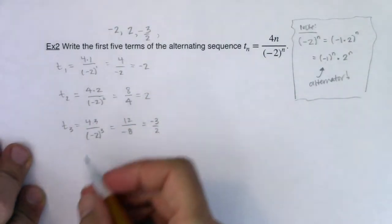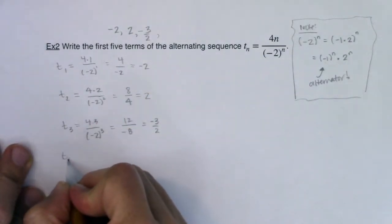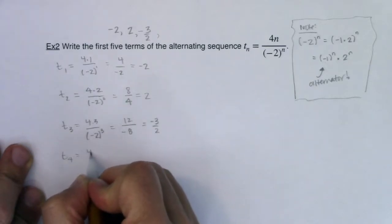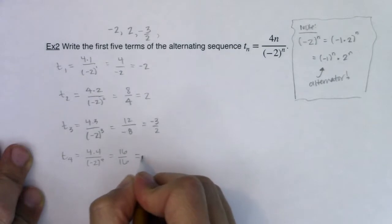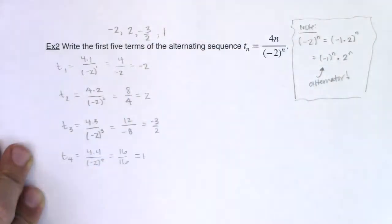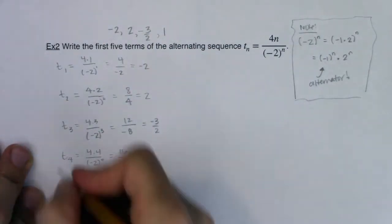So let's see how we're doing here. Can we still see what I'm working with? Yeah. So t sub 4 will be equal to 4 times 4 over negative 2 to the 4th. Well, 4 times 4 is 16. Negative 2 to the 4th is also 16. So this ratio is 1. So I'm picking these apart, I've got one more to go.